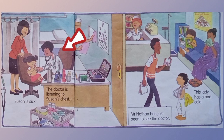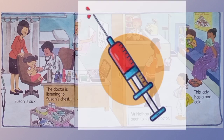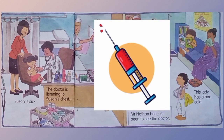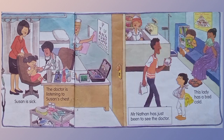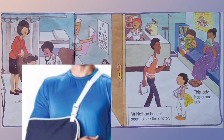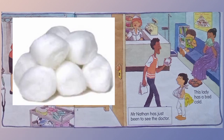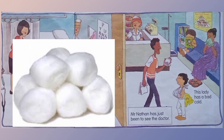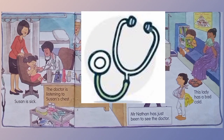Why does the doctor check up our body? To see if we are healthy or not. Whenever you are not sick, why does the doctor check us? To make sure that you are growing well. If you are sick or hurt, what does the doctor give you? The doctor gives medicine or a bandage. Why does the doctor use a syringe? To inject the medicine. Why do we use a sling? To support the hand. Why do we use cotton wool? To wipe wounds. Why do we use a stethoscope? To listen to the chest.